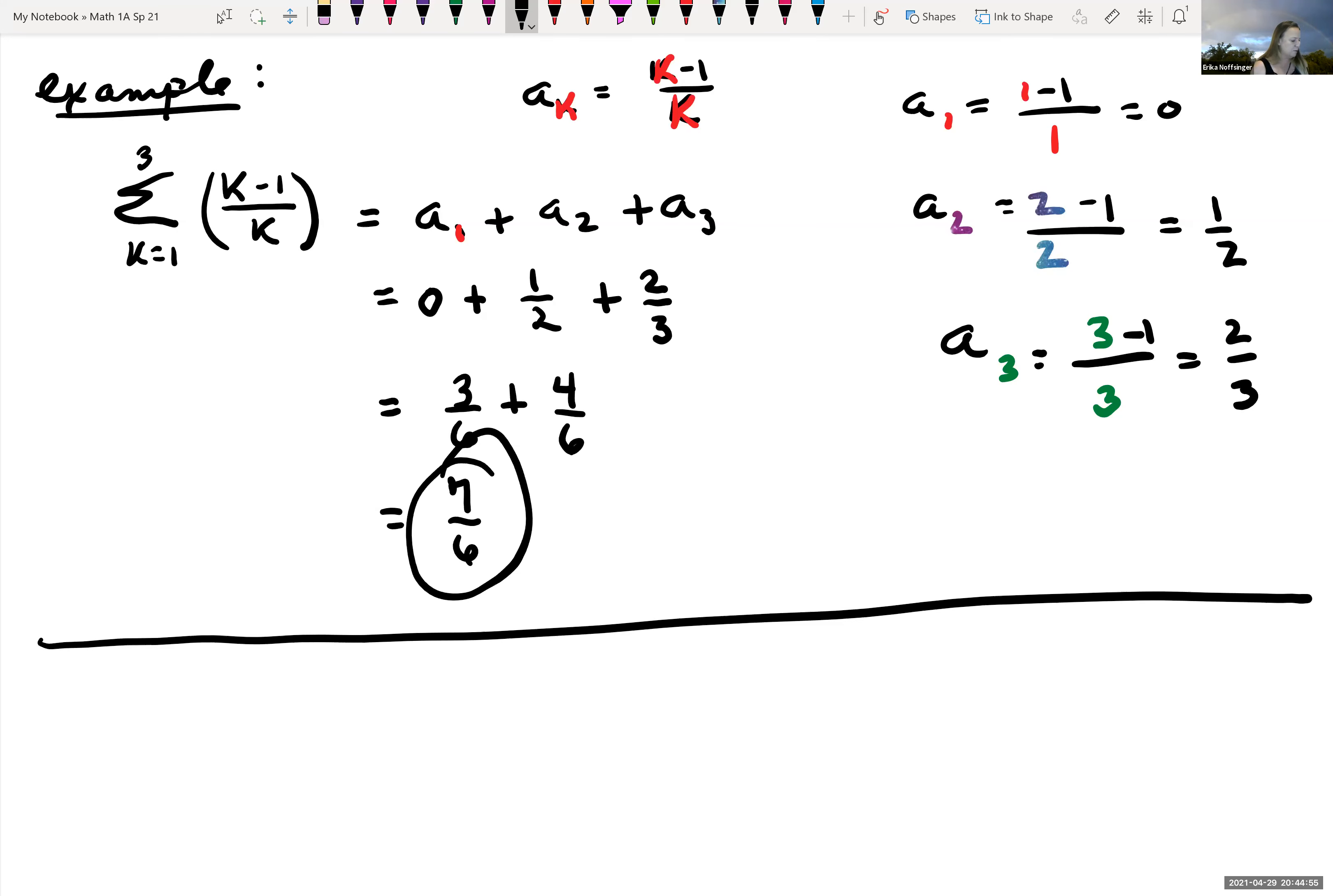Okay, so let's look at a couple more examples really quickly. Let's say that you're given some information about summations. You're given that if you looked at the summation of a sub K, where K starts at one and it goes to N, this is equal to negative five. And if you have the summation from K equals one to N of B sub K, this is equal to six. And we want to find the following values.